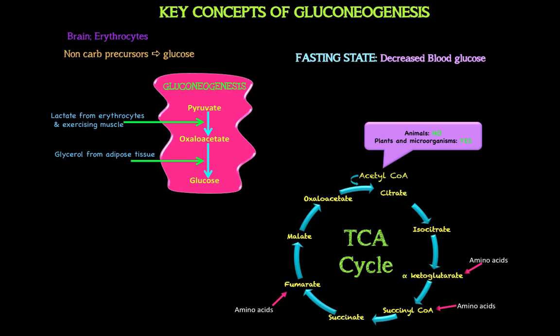There are 20 common amino acids, and 18 of them are glucogenic — some being both glucogenic and ketogenic. However, two amino acids are solely and exclusively ketogenic: they do not give rise to glucose when metabolized. Those two are leucine and lysine — remember the two L's. All other 18 are glucogenic, some also ketogenic, but leucine and lysine are entirely ketogenic.